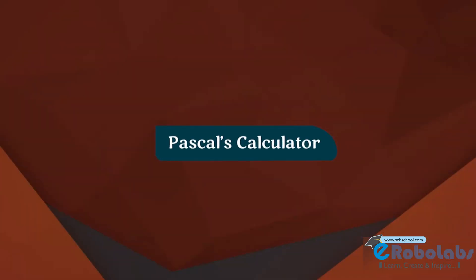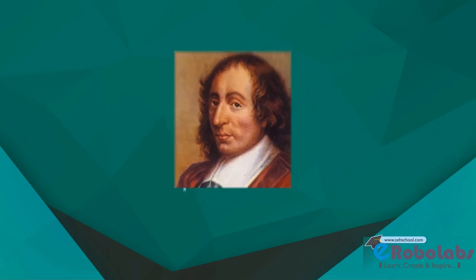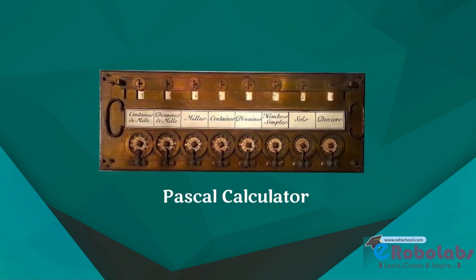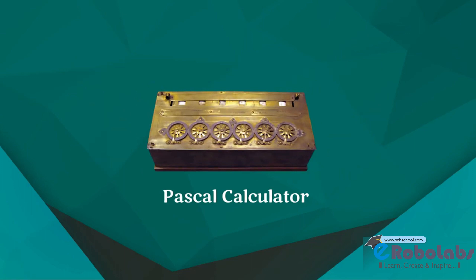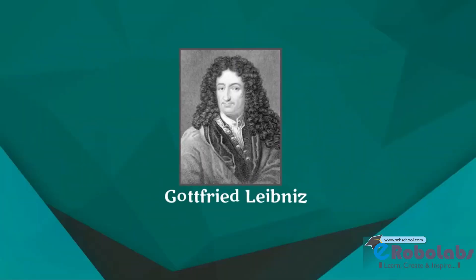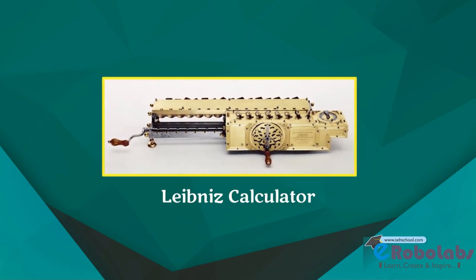Pascal's Calculator: In the year 1642, Blaise Pascal, a French scientist, invented an adding machine called Pascal's Calculator. This was the first mechanical calculator which represents the position of a digit with the help of gears in it. Leibniz Calculator: In the year 1671, a German mathematician, Gottfried Leibniz, modified the Pascal Calculator and developed a machine which could perform various calculations based on multiplication and division as well.